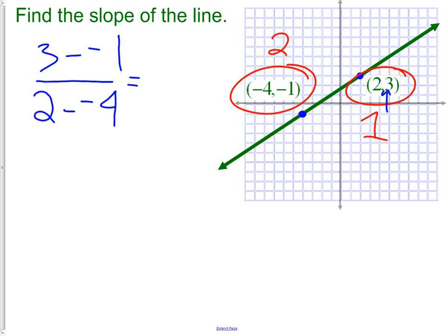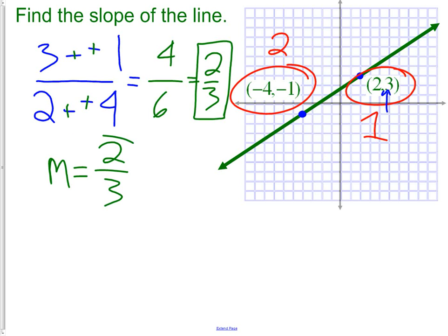3 minus minus 1 is really 3 plus 1, which would give us 4. And 2 minus minus 4 would give me 6, which is the same as 2 thirds. We would say that m, which is the letter for slope, is equal to 2 thirds.